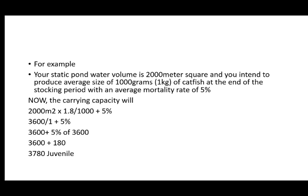When you multiply 2000 × 1.8, you get 3600, divided by 1 kg, giving you 3600. Then you add 5% of 3600, which is 180. So 3600 + 180 = 3780 juveniles. That means 3780 juveniles should be stocked in a 2000 square meter container. Anything above 3780 means you are overstocking the pond, and you will definitely experience a lot of problems.